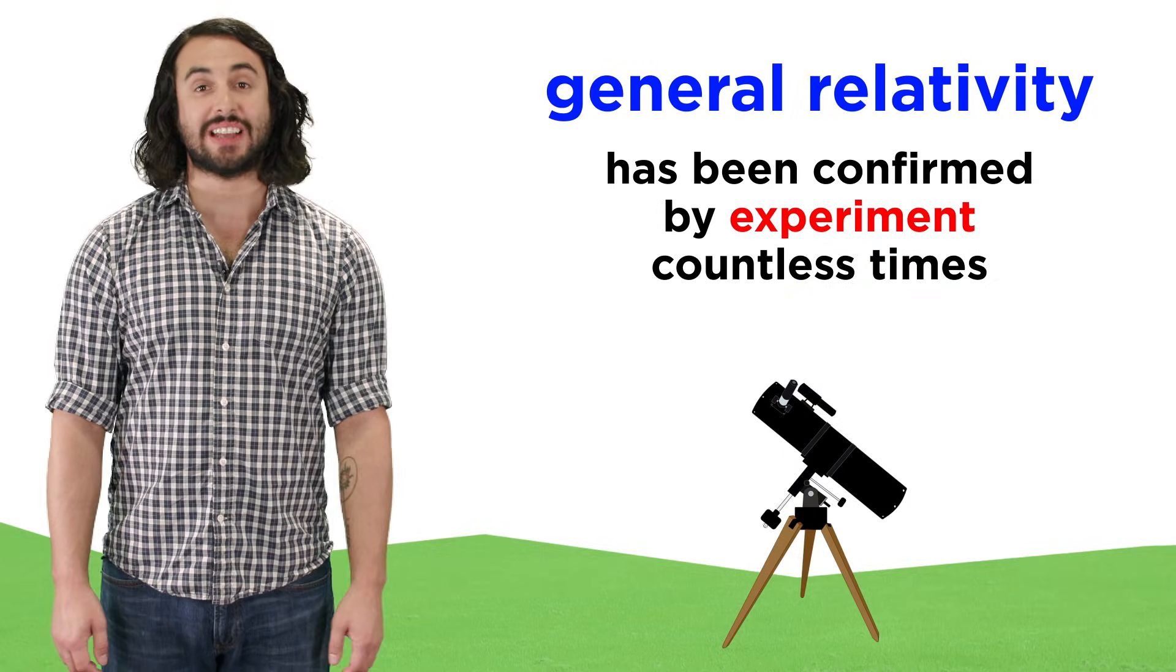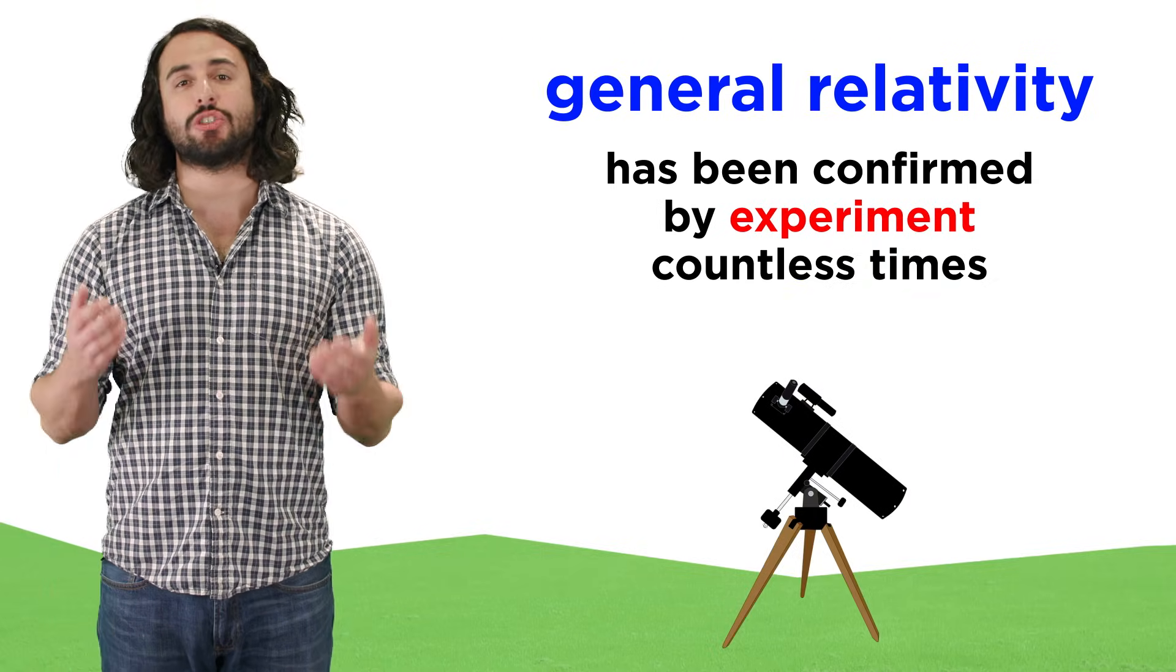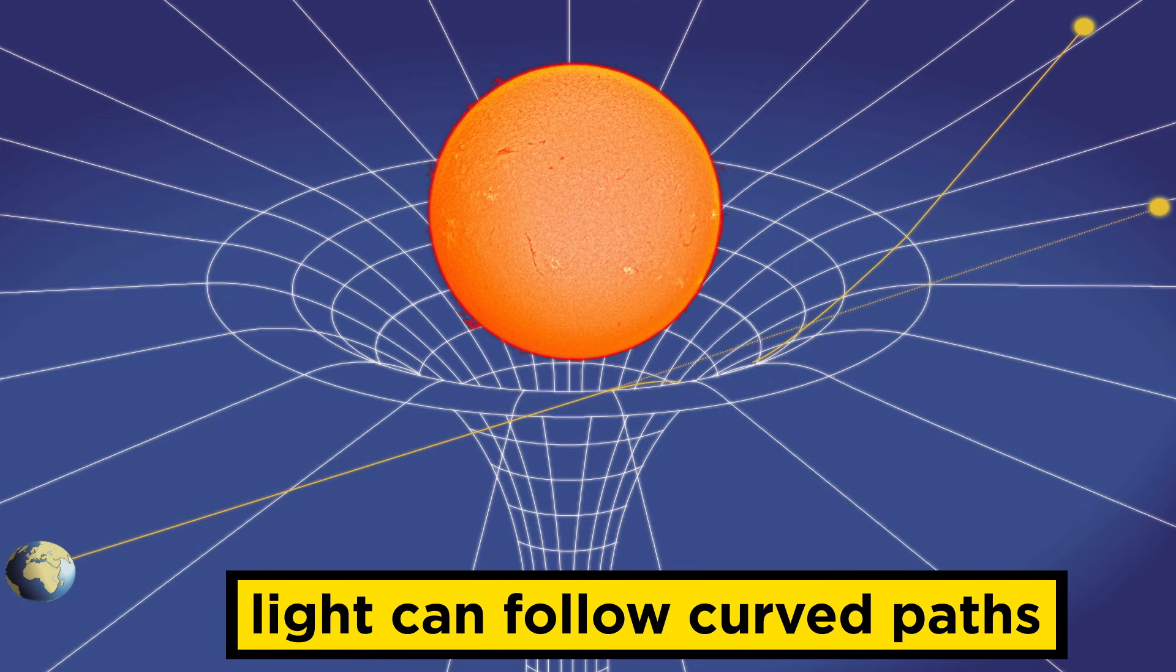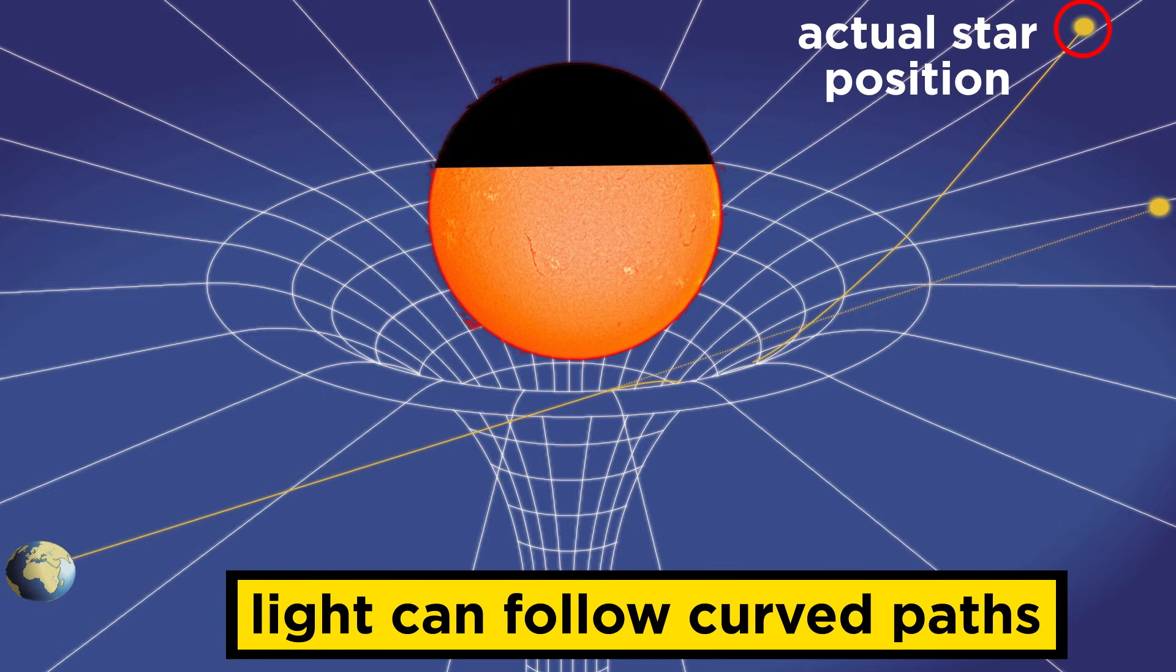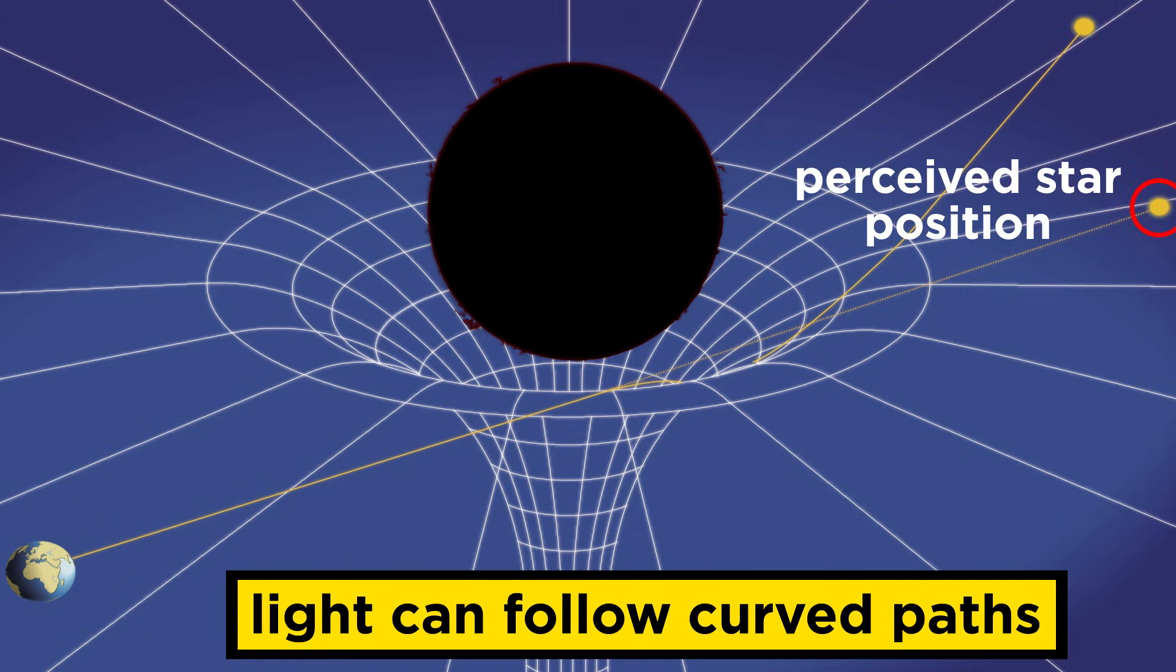General relativity, just like special relativity, enjoys a tremendous amount of corroboration by experiment. One necessary result of the theory is that light should follow curved paths around massive objects, and a famous experiment observed light from a distant star curving around the sun during a solar eclipse, whereby the blocking of the sun's light allowed us to directly observe the light from the star behind, which appeared in a shifted location.